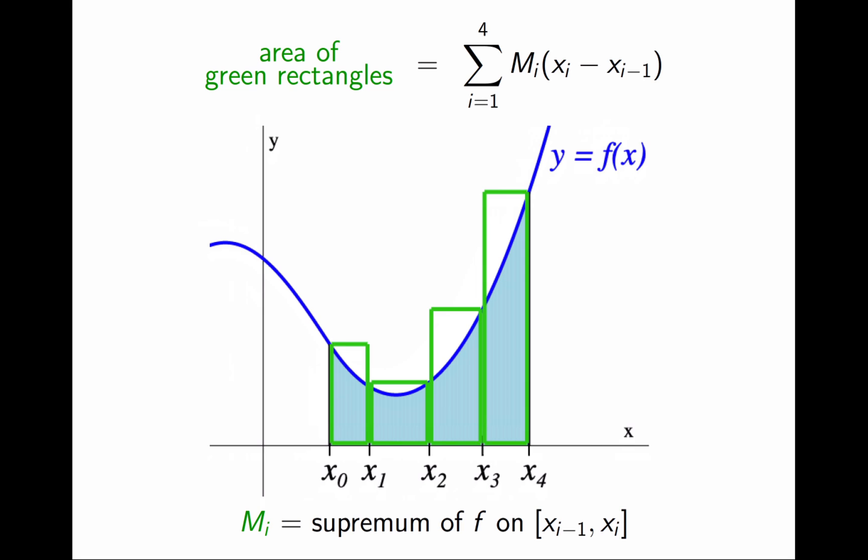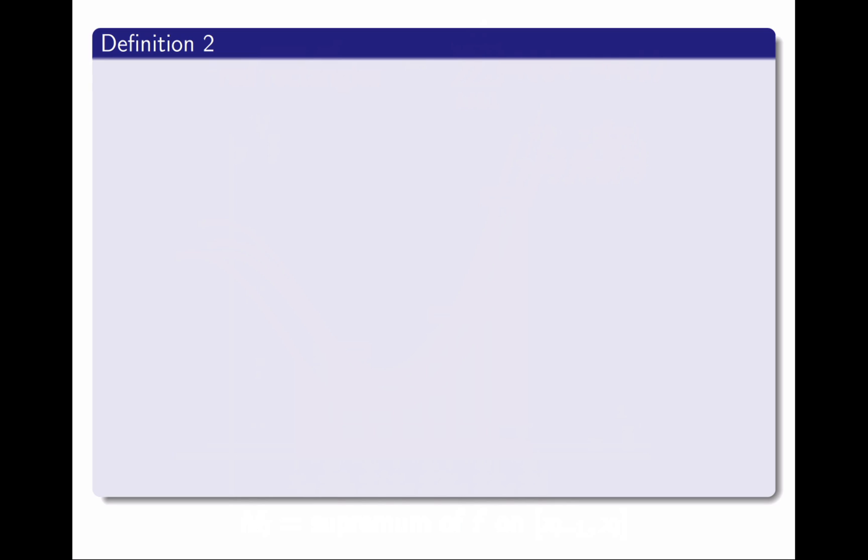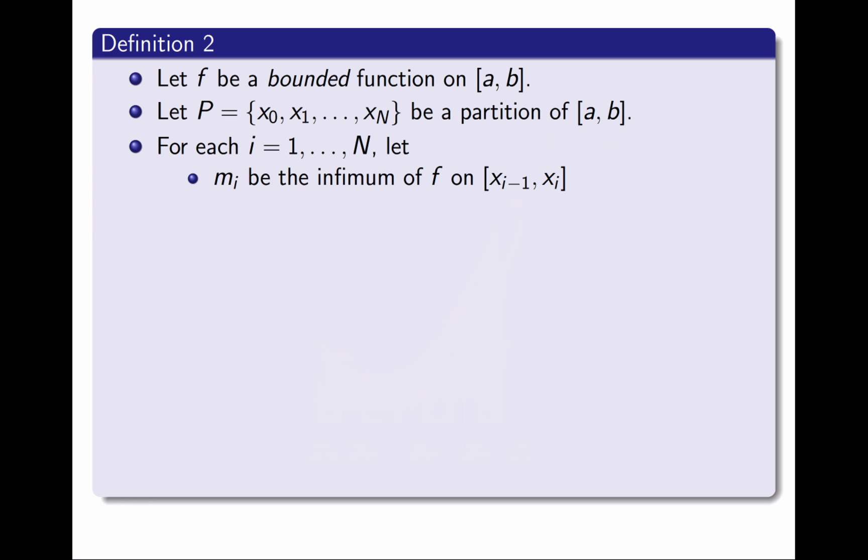This leads us to a new definition. Given a bounded function f on an interval, and a partition P of the interval, let's introduce some notation. On each sub-interval, I am calling little mᵢ the infimum of the function, and big Mᵢ the supremum of the function. And finally, it is customary to write Δxᵢ for the width of this subinterval.